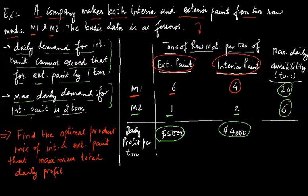These are the two conditions we need to keep in mind, and of course the conditions given in this table. We are being asked to find the optimal product mix of interior and exterior paint that maximizes the total daily profit. This is what we need to find out.